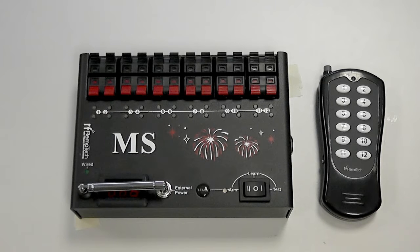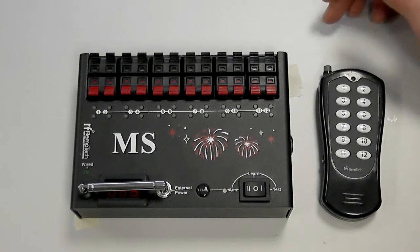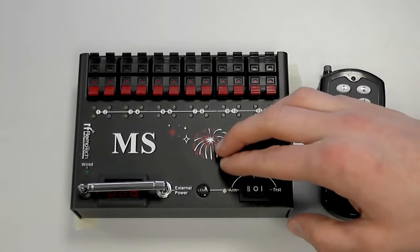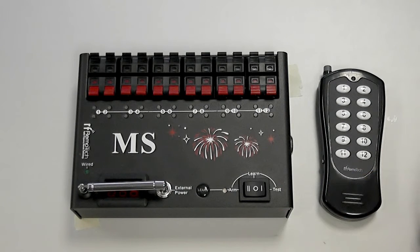Hi, it's Andrew here from easypyro.com and I'm just going to introduce the new 12Q wireless firing system to you. This is the MS-12 and it's just a nice little simple system that you can use on its own or you can use it in conjunction with our 1Q receivers as well.